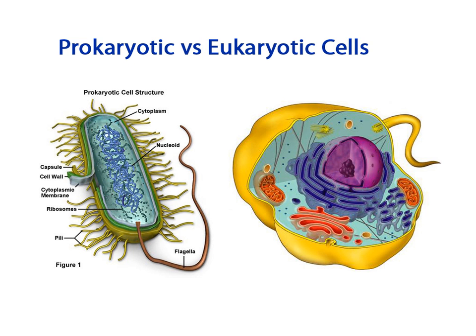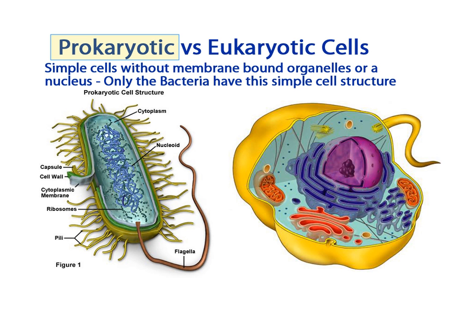We are going to spend most of our time discussing the eukaryotic cells because that is the focus of this unit. But to clarify, prokaryotic cells are simple cells without membrane-bound organelles or a membrane-bound nucleus. Basically, only the bacteria have this simple cell structure.